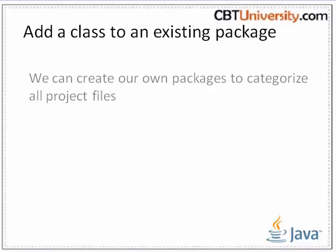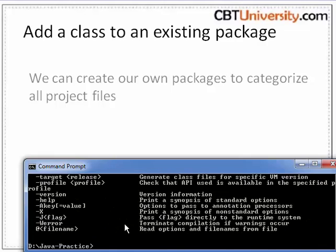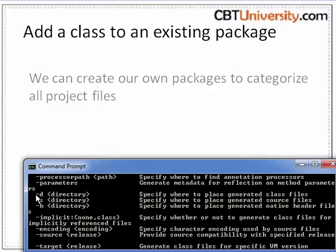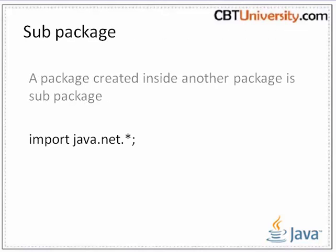Interfaces can also be defined as part of the package and imported and implemented like classes. We can use the -d switch to compile and target the destination folder for the generated class file — '-d directory' specifies where to place the generated class files, creating the class file in the destination folder. A sub-package is a package created inside another package. Importing a package will not import the sub-packages by default; sub-packages have to be imported explicitly. Sub-packages created inside a java package need to be called explicitly to get the network operations classes.